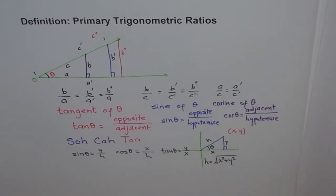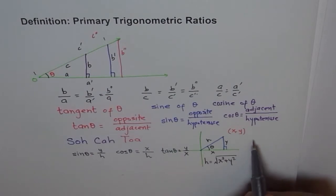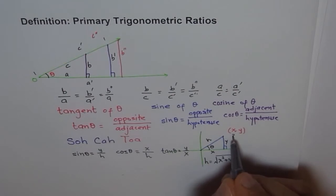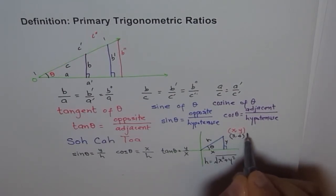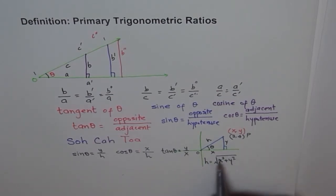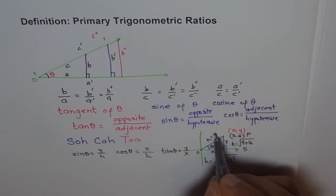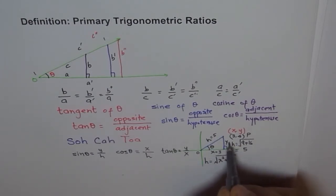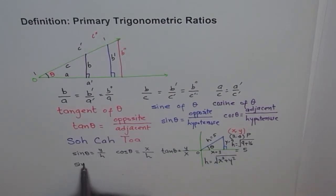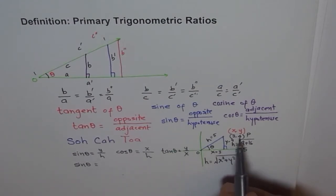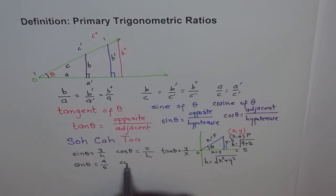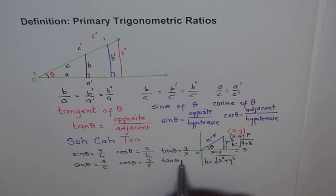Let me now draw a triangle and give values. Instead of X and Y, let me write this as 3 and 4. Let's say the coordinate here is point P and this is my origin. So what is H? H equals square root of 3 squared which is 9, plus 4 squared which is 16 — that becomes 25 and square root of 25 is 5. So H equals 5, X equals 3, and Y equals 4. Sine theta equals 4 over 5 — the Y value over 5. Cosine theta equals 3 over 5. And tan theta equals Y over X, which is 4 over 3.